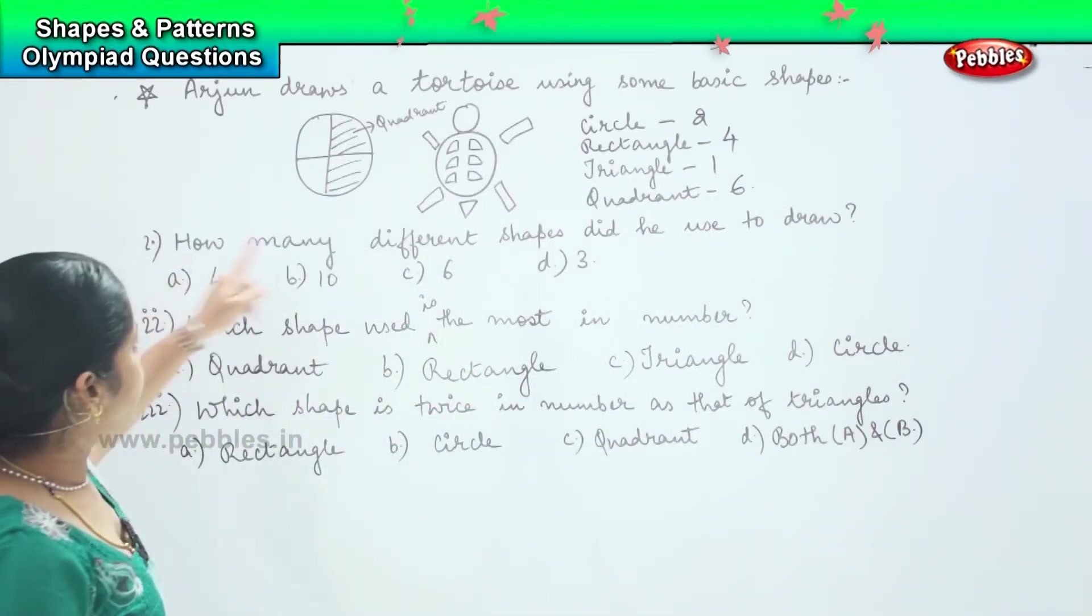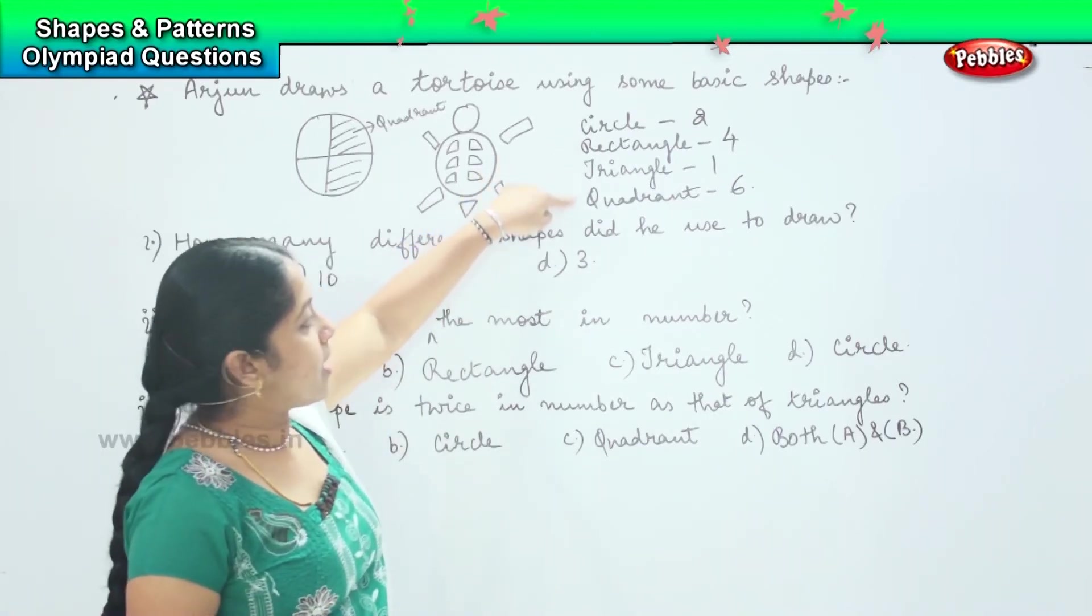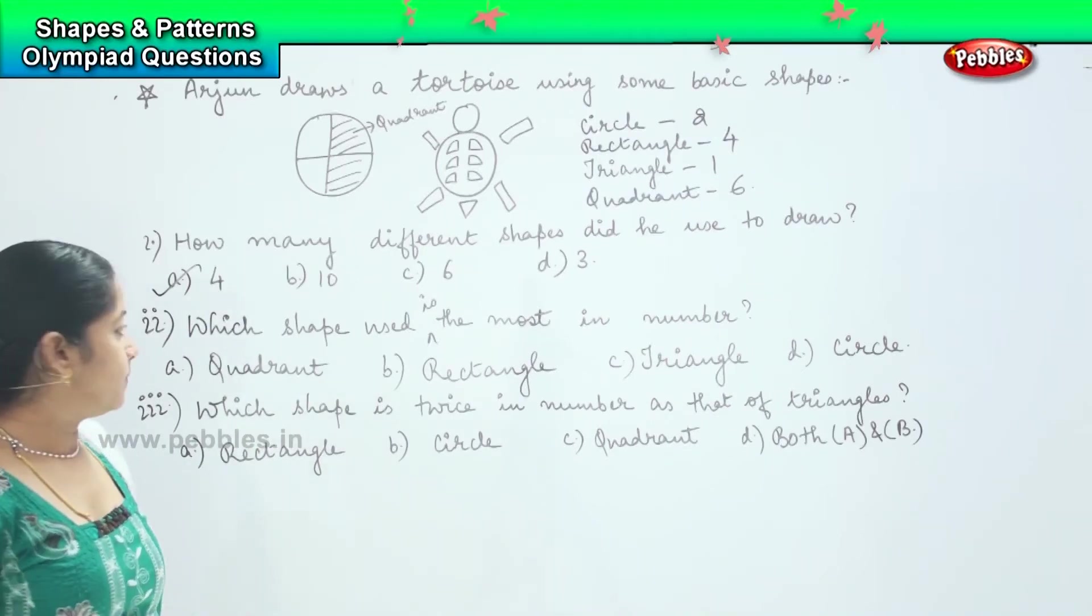So how many different shapes did he use to draw? It's 1, 2, 3, and 4. He has used four shapes. So option A is the right one.